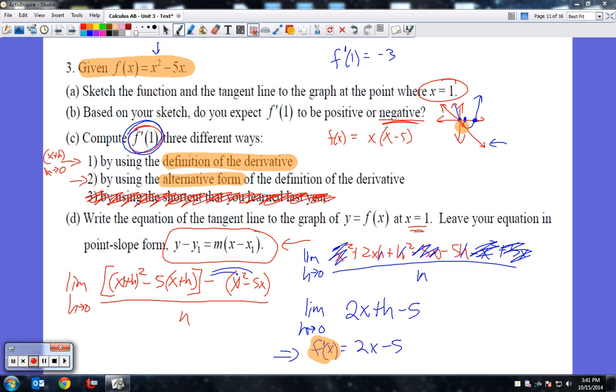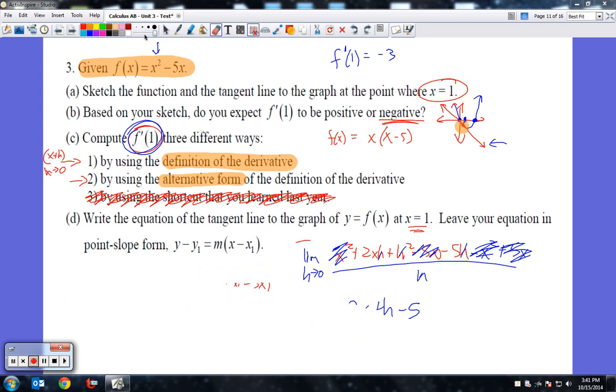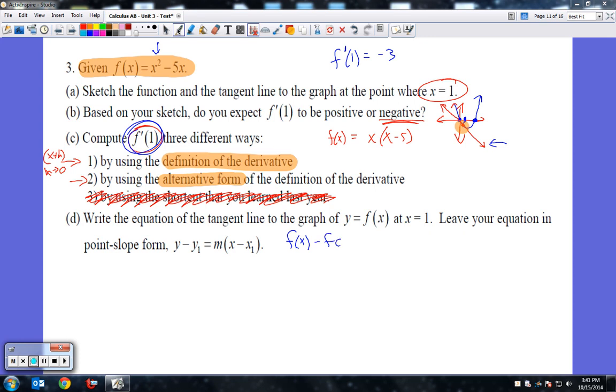Alright, so now if I go to using the alternative form, real quickly I will get rid of this. The alternative form, if you remember, is f(x) - f(c) over x - c as x approaches c. What is our c value? Well, our c value is that x that we're evaluating, it is going to be one.